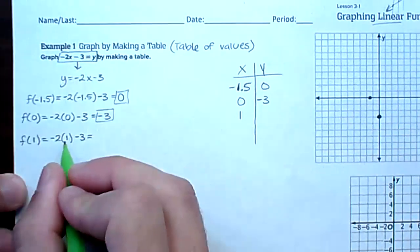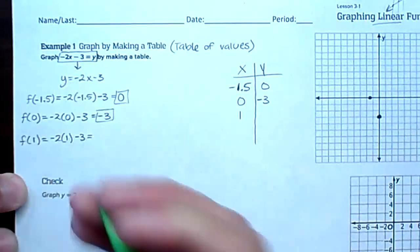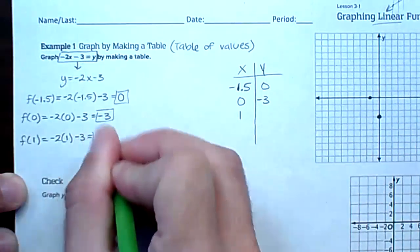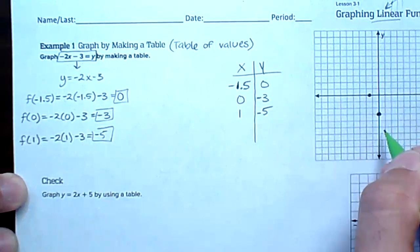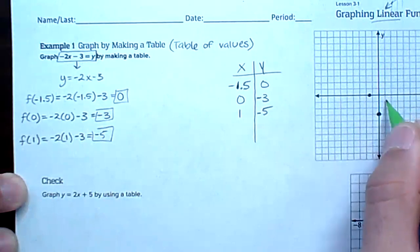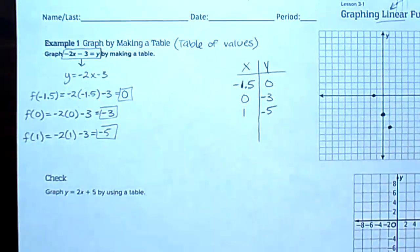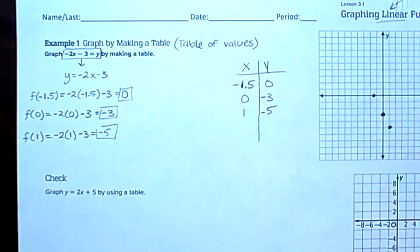f(1): negative 2 times 1 is negative 2, minus 3 gives negative 5. So at x = 1, y = negative 5. The point 1 comma negative 5 lands at positive 1 on x, down 5. Let's verify in Desmos — and there it is, that point exists on the line.